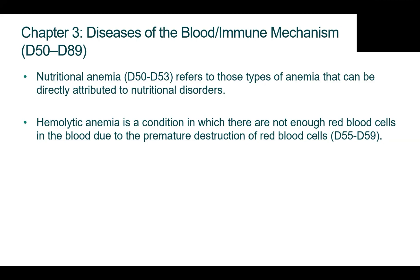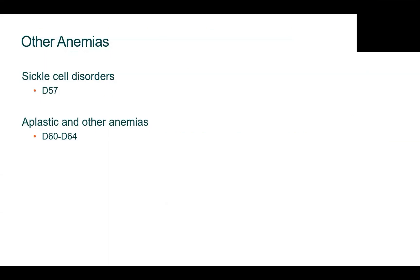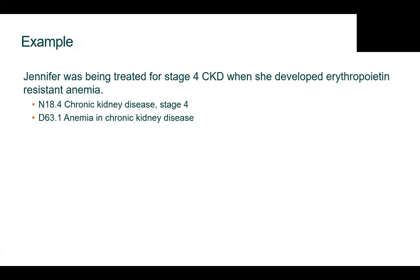Hemolytic anemia is a condition in which there are not enough red blood cells in the blood due to the premature destruction of the red blood cells, and these are coded to the range of D55 through D59. Sickle cell disorders — you've heard of sickle cell anemia — are located under category D57 and are broken down by type and whether crisis is present. Code block D60 to D64 contains codes for aplastic and other anemias, including anemia in chronic diseases classified elsewhere and secondary anemias.